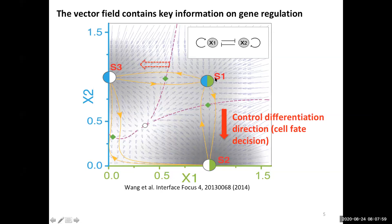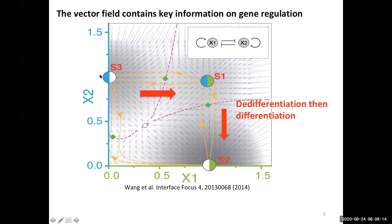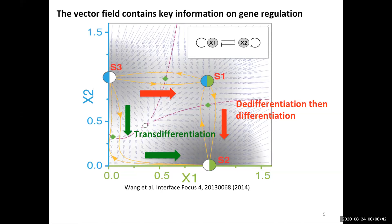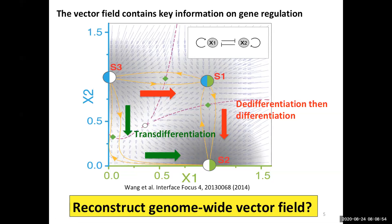From anywhere, cells can converge into three stable attractors, corresponding to stable phenotypes. If we know the vector field, we can understand the regulation and control the process. For example, starting from x1, it can differentiate into x3 or x2. If we suppress x2, we bias x1 to go to x2. Or starting from x3, we can activate x1 then suppress x2 to reprogram s3 to s2. There are tens of thousands of genes interacting, so knowing the genome-wide vector field would be very informative.